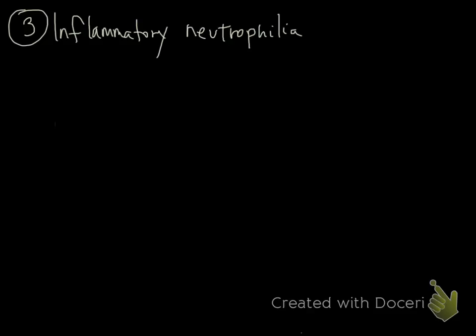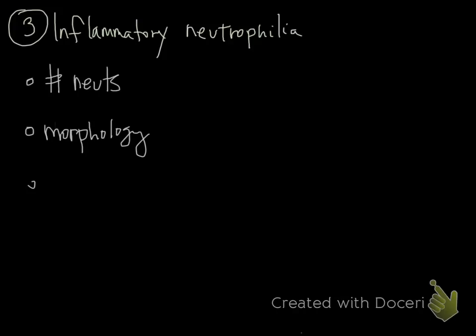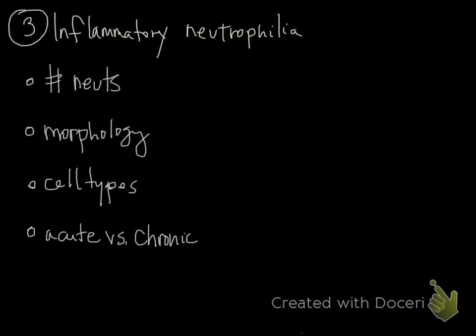With an inflammatory neutrophilia, we have to consider a few things: numbers of neutrophils, both mature and immature; morphology of neutrophils; and other cell types, because sometimes that can help identify the type of neutrophilia and what type of inflammation it is. We'll also talk about acute and chronic inflammation. Keep in mind that stress can happen concurrently with inflammation in these sick animals, and you identify that by looking for a lymphopenia.